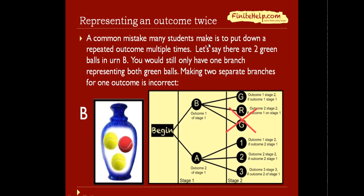A common mistake that many students make is to put down a repeated outcome multiple times. So let's say for urn B there are actually two green balls. Well when you draw the tree you will still only make one branch for the green because it's only one possible outcome. Making two separate branches for one outcome would be incorrect as shown here by this example.